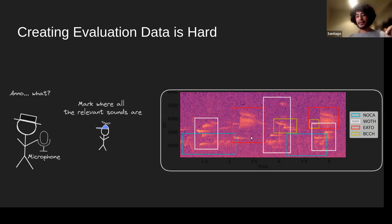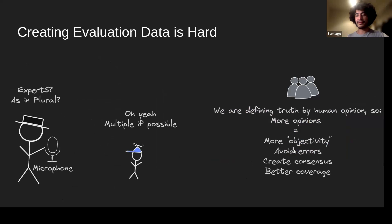Annotation is the process where, after recording, you review the recording to find the sounds you're interested in, mark and locate them within the whole recording. For example, in a spectrogram containing multiple sounds, you select all relevant sounds and provide additional information — in this case, the species that emitted each call. Having multiple experts is important because we're defining ground truth as human opinion, so multiple opinions give better claims for objectivity, help identify errors, create consensus on ambiguous cases, and provide better coverage.